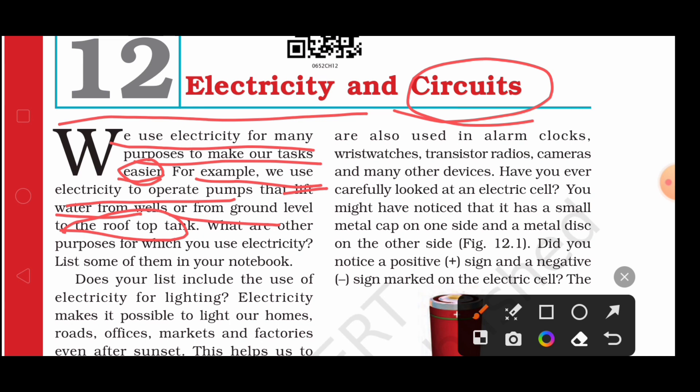What are other purposes for which you use electricity? List some of them in your notebook. Examples include: charging, electric bulbs, electric appliances, bridges, machines, etc. Does your list include the use of electricity for lighting? Note that one is lightening and one is lighting — if you know the difference, write it down in the comment section.